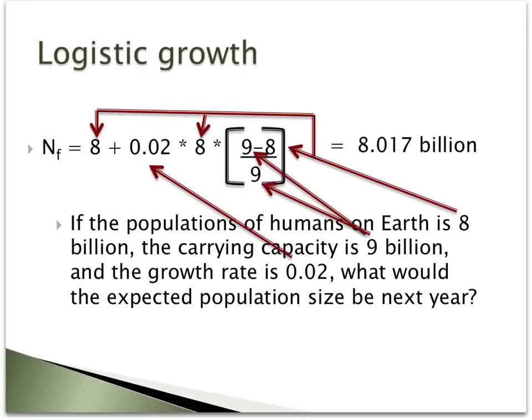To determine next year's population size using the logistic model of growth, you would take the current population, 8 billion, plus the growth rate, 0.02, times the current population size, 8 billion, and then multiply those numbers times the carrying capacity minus the current population divided by the carrying capacity — that is, 9 billion minus 8 billion divided by 9 billion. When you plug all those numbers into your calculator, what you would arrive at is 8.017 billion, or 8 billion 17 million individuals.